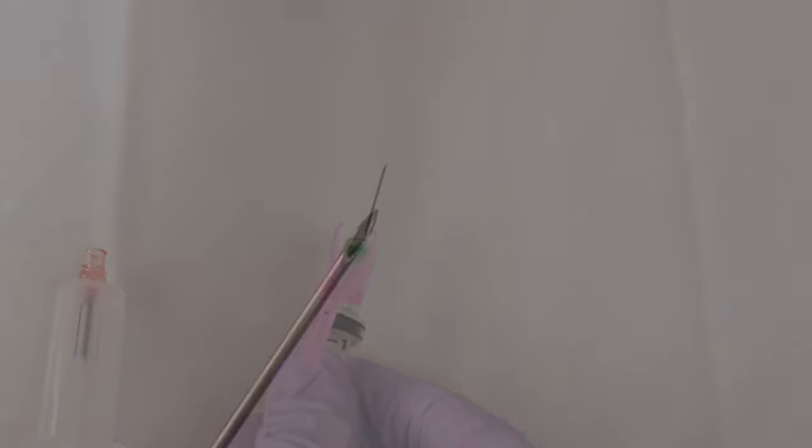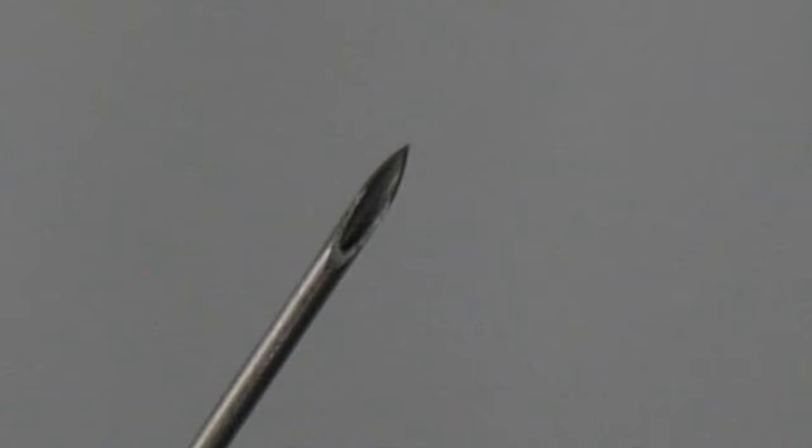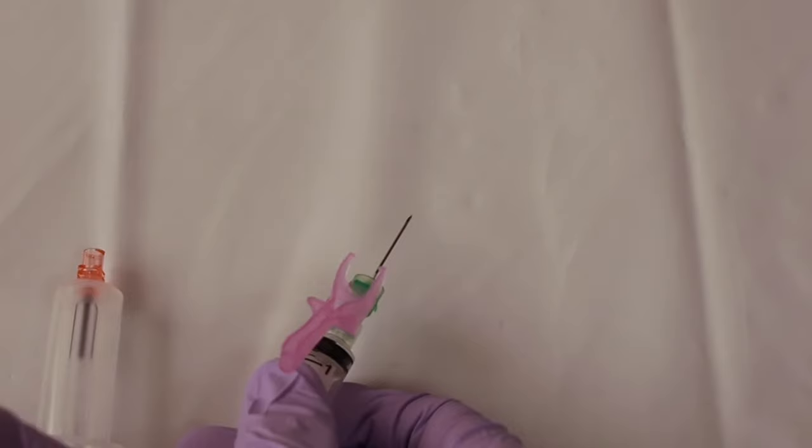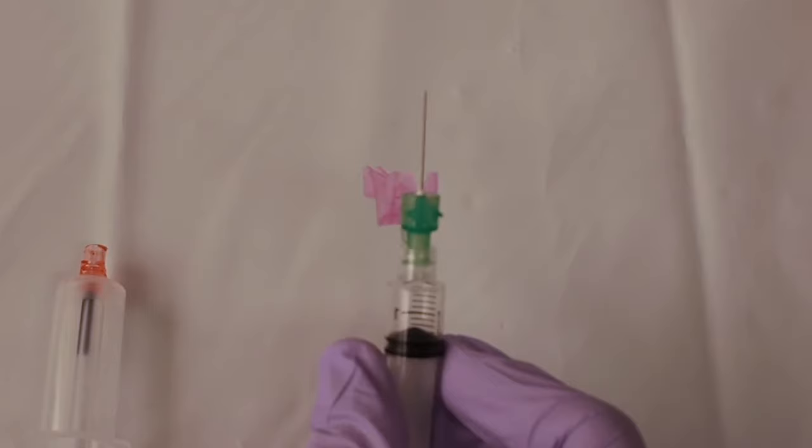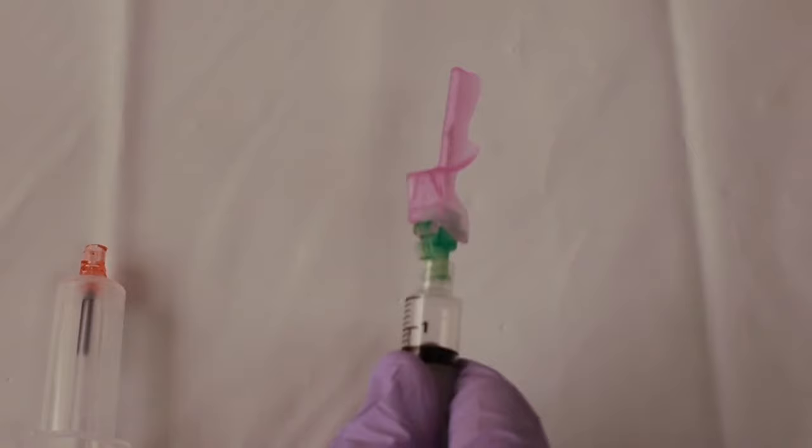And you can see the bevel is facing straight up. With the syringe, after you have completed the draw, we're going to invert the syringe and we'll lock it, and you can hear that snap. The syringe is locked at this point.